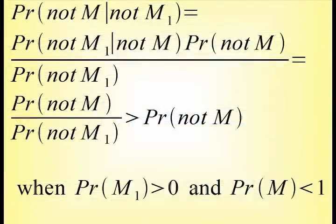Algebraically, we use Bayes' formula, but this will only be a repetition of the stuff in clip 3, so I will avoid describing it. Just note that the only way the probability for M stays the same is if M is a priori certain, or if the falsified sub-model M1 is a priori not possible.